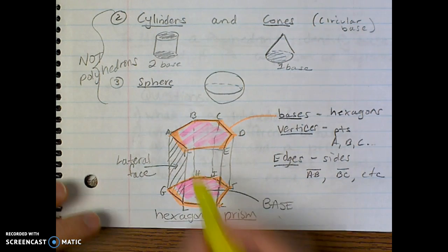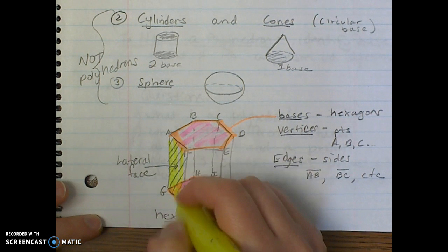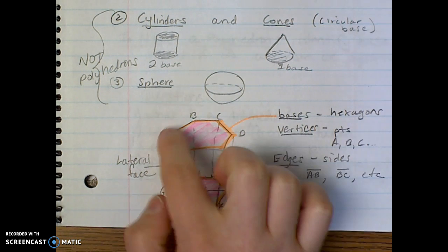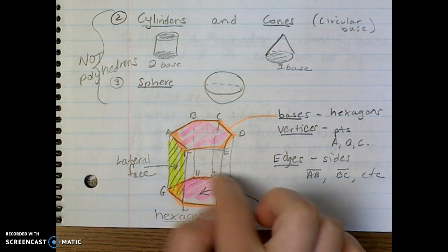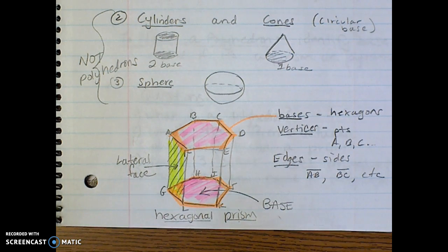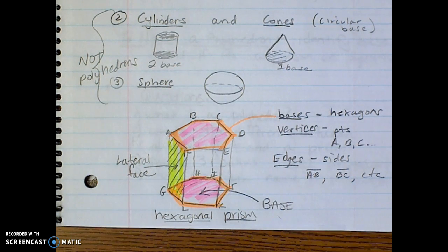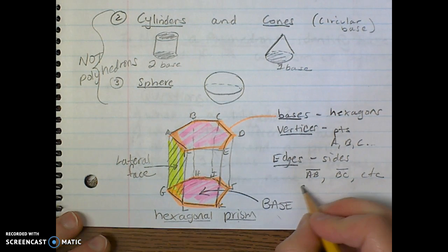Then we have all of these other flat surfaces around the sides. This rectangle is called the lateral face—it's a flat space on this three-dimensional shape that is not a base. And then we've got vertices, these are all the little points, pretty much like the corners. And then we've got edges, which are segments, sides of the figure. These are segments that connect two vertices.